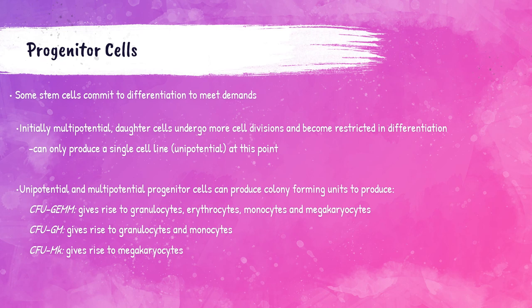Progenitor cells are committed to becoming specific cell types, and they are directed by colony-forming unit designations. CFU-GEMM gives rise to granulocytes, erythrocytes, monocytes, and megakaryocytes. CFU-GM gives rise to granulocytes and monocytes. CFU-MK gives rise to megakaryocytes.